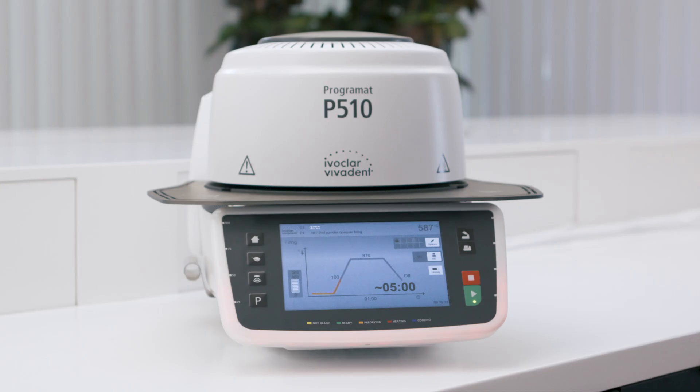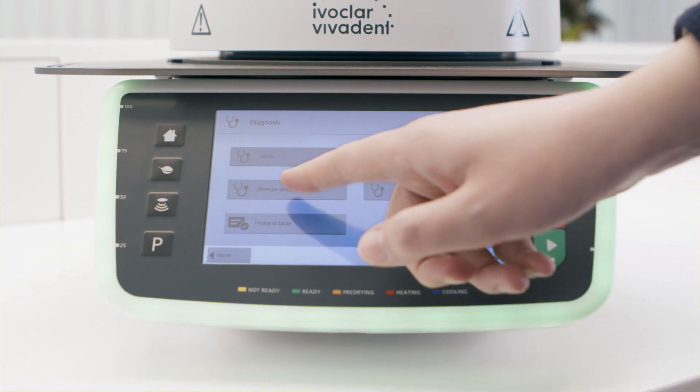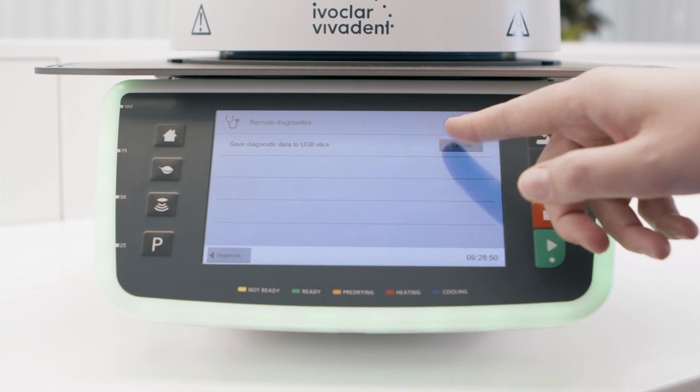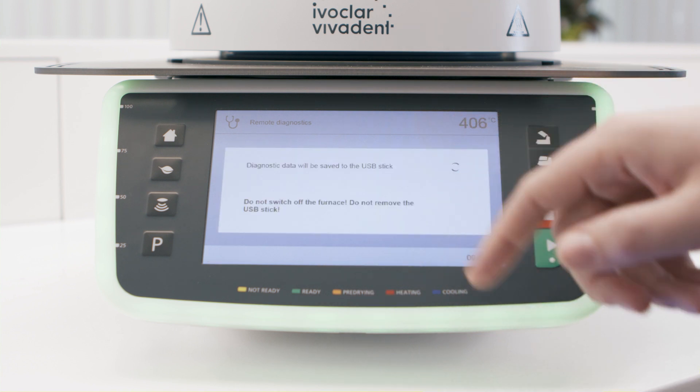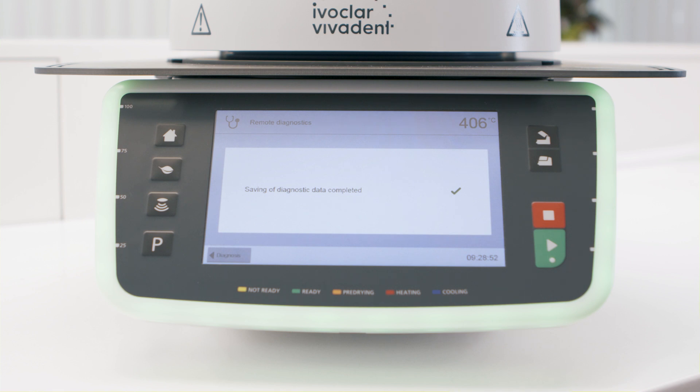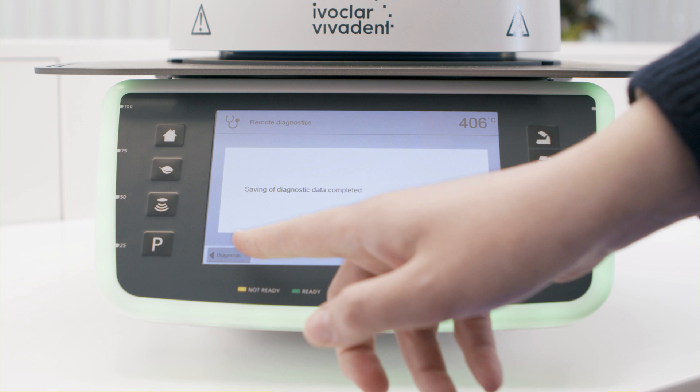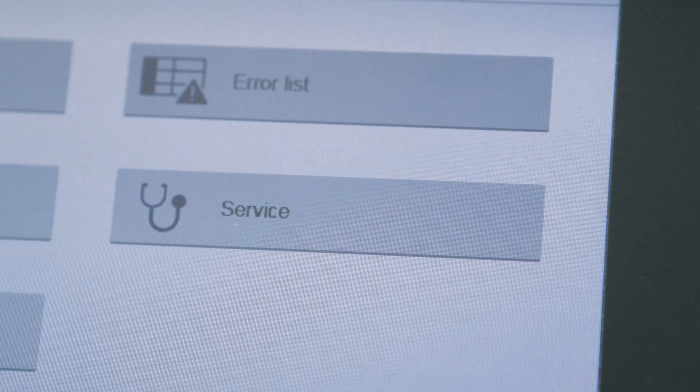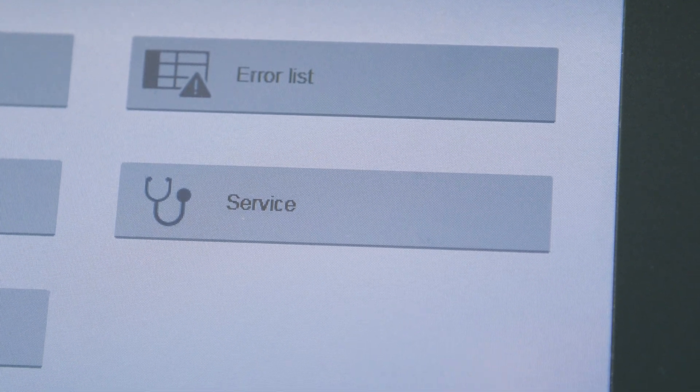If a problem occurs, you can generate a diagnostics file at the push of a button. To generate a diagnostics file, open the remote diagnostics menu. Then, connect a USB flash drive to the furnace and press execute. The diagnostics file is now saved to your USB flash drive. You can forward this file to the Ivoclar after-sales service center or to any email address.